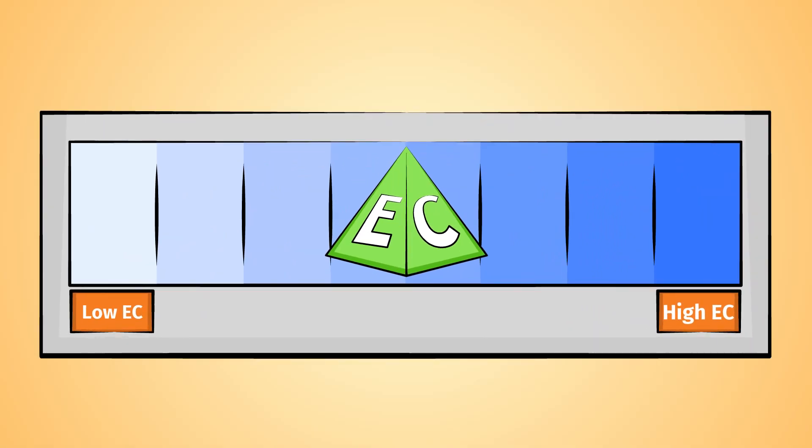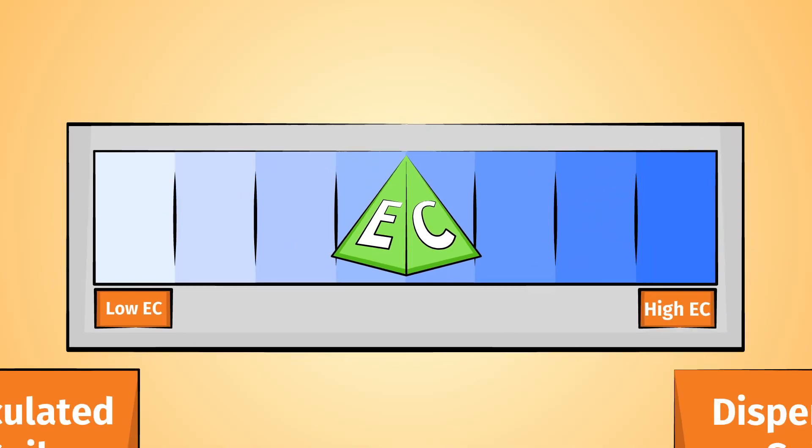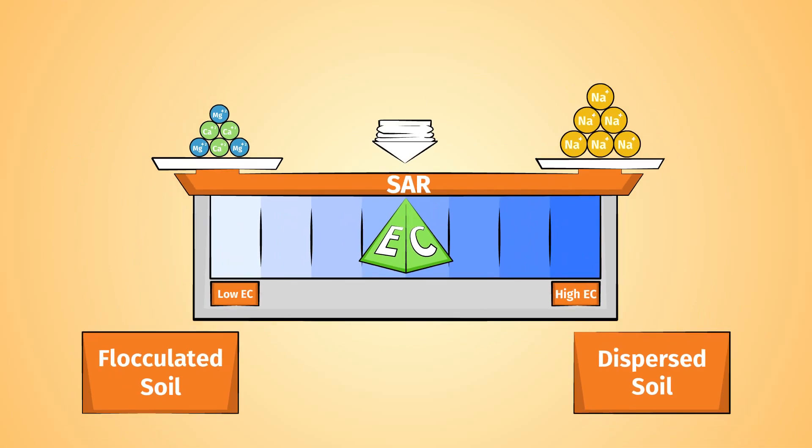Stability of the soil structure, especially in a fine textured or clayey soil, depends on the SAR, the board in the seesaw, and the amount of soluble salts in the soil, EC, the fulcrum of the seesaw.